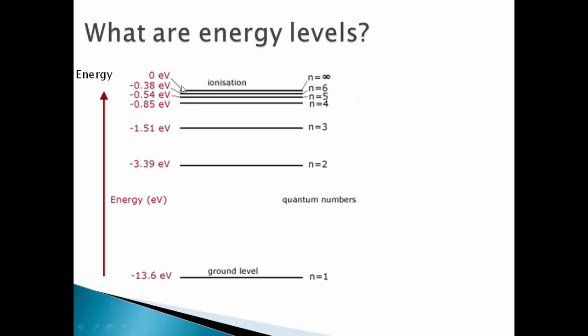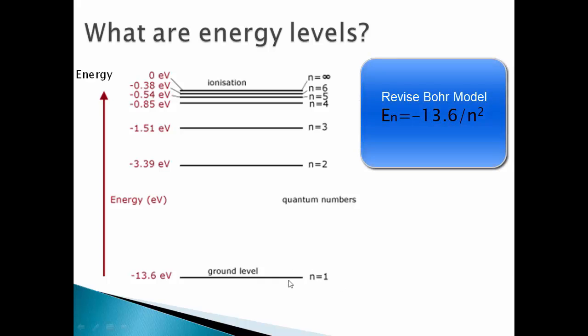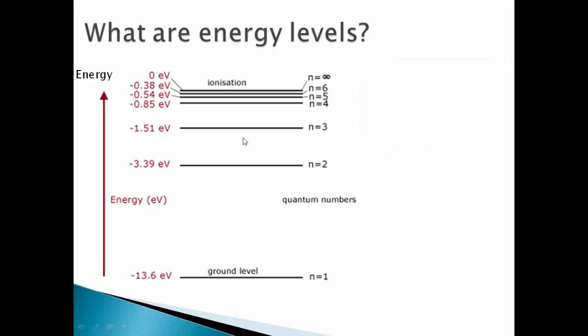So based on quantum numbers we have the energy levels: for n equals to 2, 3.39; n equals to 3, 1.51; n equals to 4 and so on. At the infinite distance you will have the energy equals to zero electron volts, or we can say that if the electron gains enough energy then it will leave the atom and we will have an ionized atom or we can have an ion.